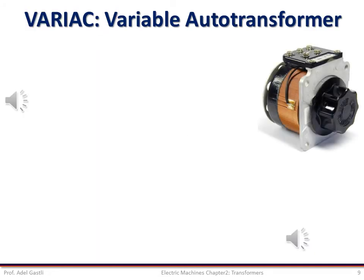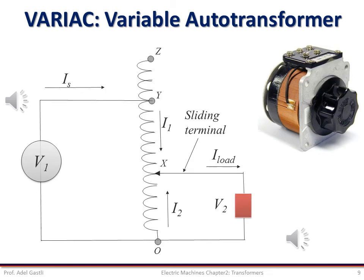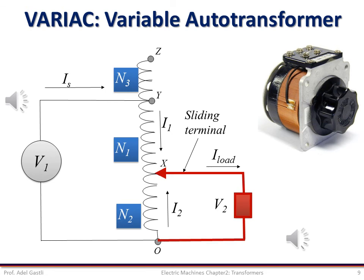There is another type of transformers, called VARIAC, which is a variable autotransformer. An example is shown here. The winding is divided into three parts with N1, N2, and N3 number of turns in each part. The output is connected to a sliding terminal, which means that the number of turns N2 is variable depending on the position of the sliding tap.